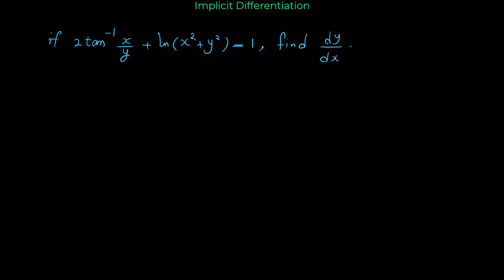Hello and welcome. In this video I'm going to show you an example of implicit differentiation that is a bit challenging. If 2 tangent inverse of x over y plus ln of x squared plus y squared equals 1, find dy over dx.